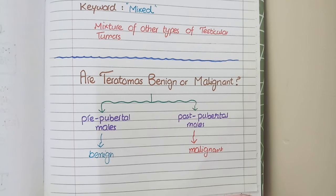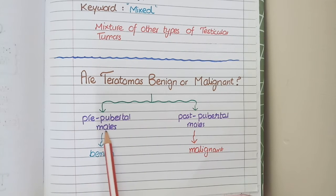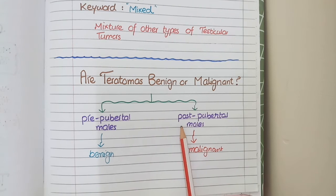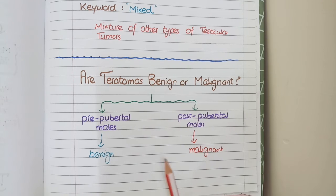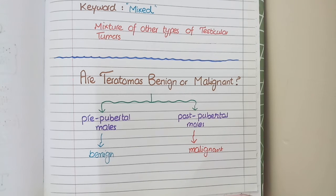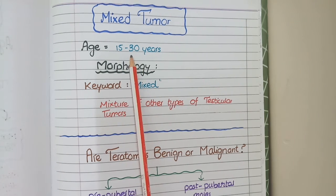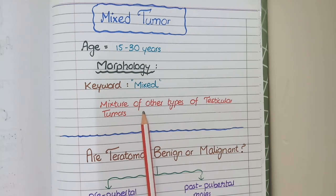An additional point: teratomas that arise before puberty are benign, in contrast to most testicular tumors that are malignant. If teratomas arise after puberty, they are generally malignant. So pre-pubertal testicular teratomas are benign, and post-pubertal testicular teratomas are usually malignant. Mixed tumors arise at age 15 to 30 years and, as the name implies, are composed of a mixture of other testicular tumor types, such as a mix of embryonal carcinoma and choriocarcinoma.